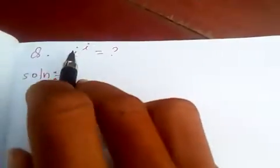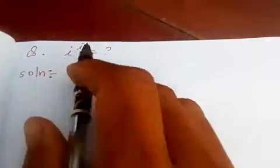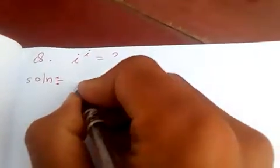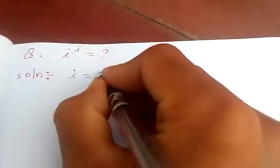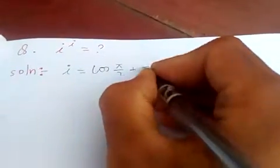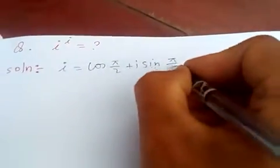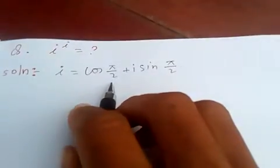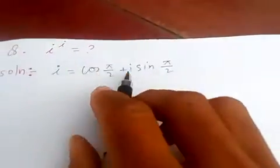Hi friends, today let's find i to the power i. We know i is cos π/2 plus i sin π/2, which means cos 90 degrees is 0 and sin 90 degrees is 1, so it equals i.